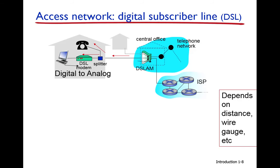The first technology for access networks is DSL — Digital Subscriber Line. It is used for residential access and uses the existing telephone line, the Public Switched Telephone Network. The telephone lines already deployed in homes for voice communication can also be used for internet data access.